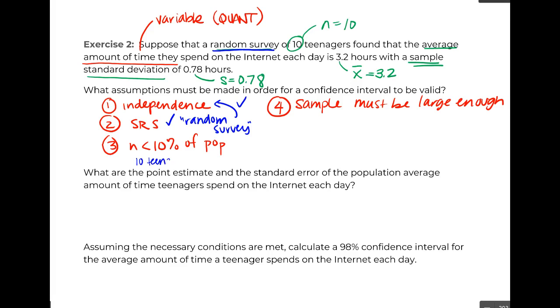N is less than 10% of the population. Well, 10 teenagers is definitely less than 10% of all teenagers. So we can go ahead and say, sure enough, we got three. Four, though, says our sample must be large enough, and our N is equal to 10, which our large enough was 15 if we had symmetric data, 30 if we didn't have symmetric data. So we definitely are failing here. We're going to bring in that or our original distribution had to be approximately normal. So the question is, is the amount of time a teen spends online, would that be normally distributed?